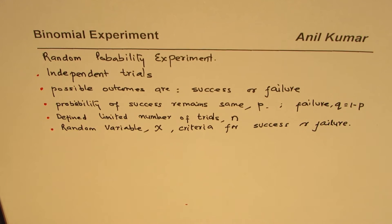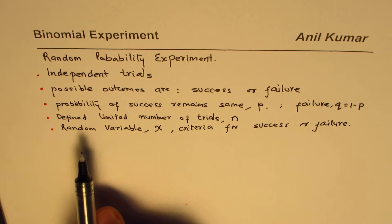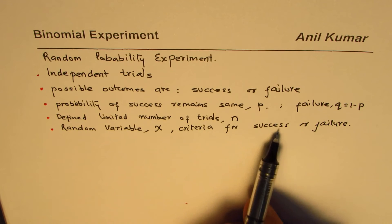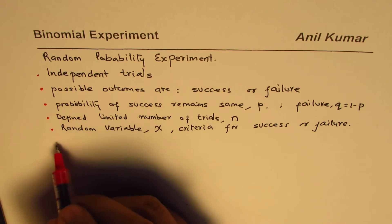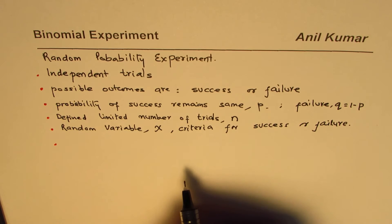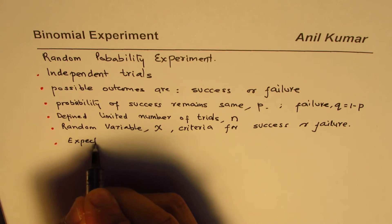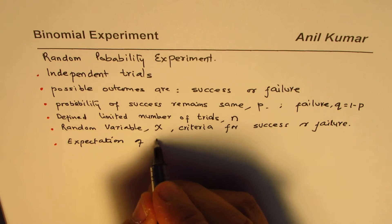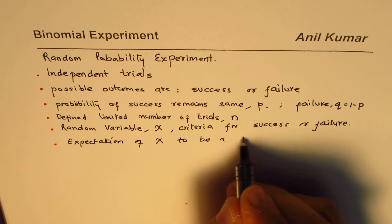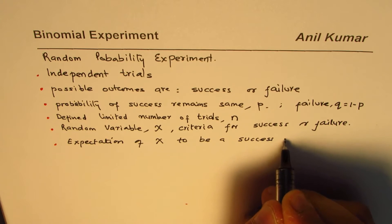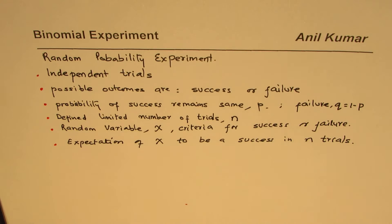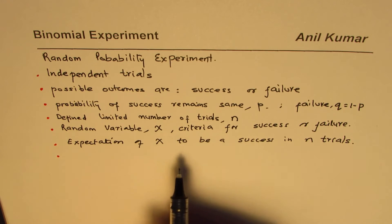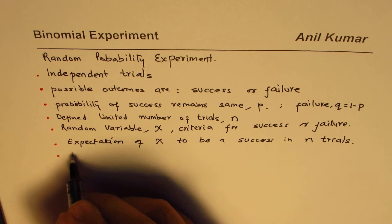In a binomial experiment we are looking for the random variable's result, which could be a success or a failure. We have n number of trials and we are trying to find the answer to one question: what is the expectation of X to be a success in n trials?